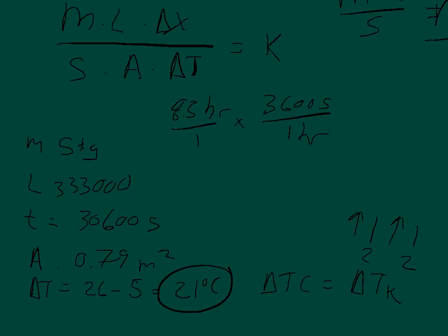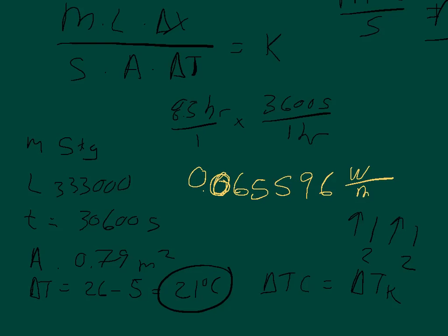If you plug those numbers into the equation, you get that the thermal conductivity constant K is approximately 0.0656 watts per meter Kelvin.